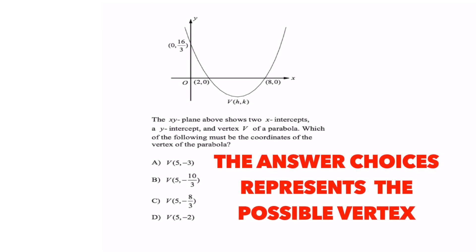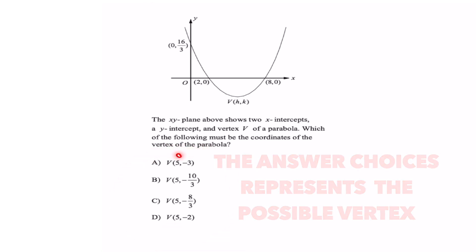So these are all your vertex. That's why they all say V, and if you look at your answer choices they all have the number 5 in there to represent the x-coordinate of your vertex.